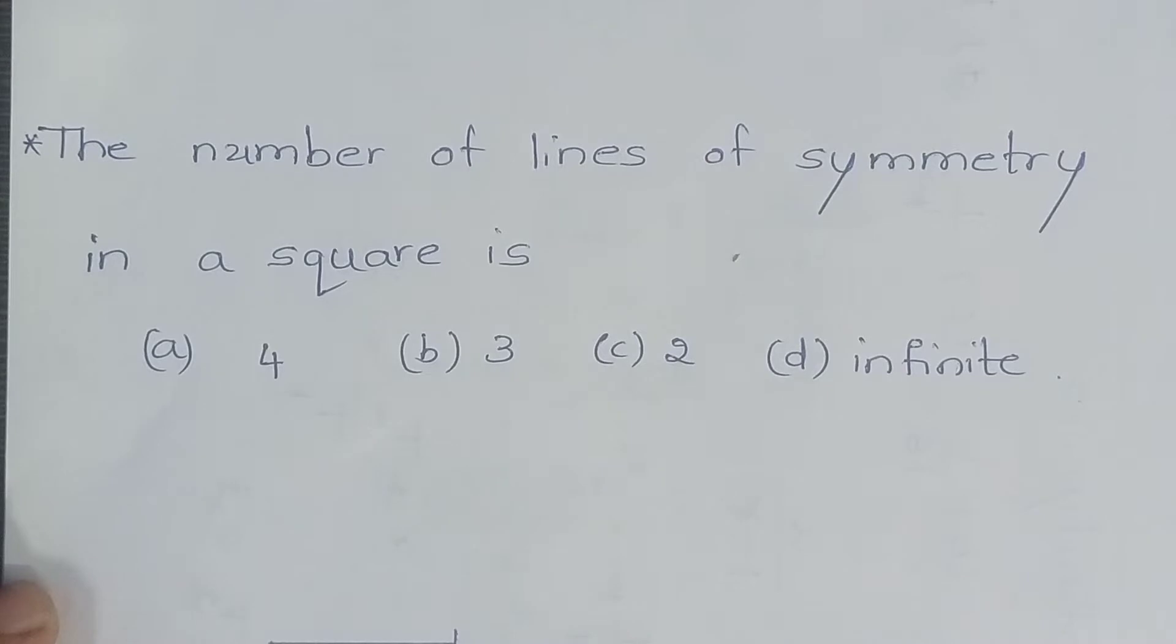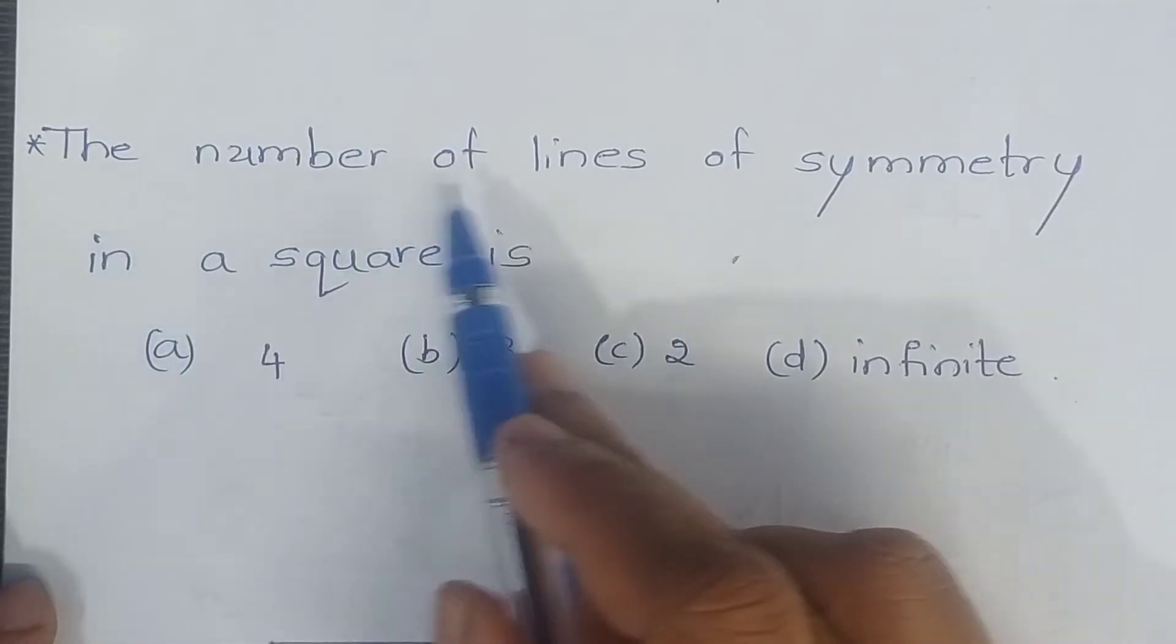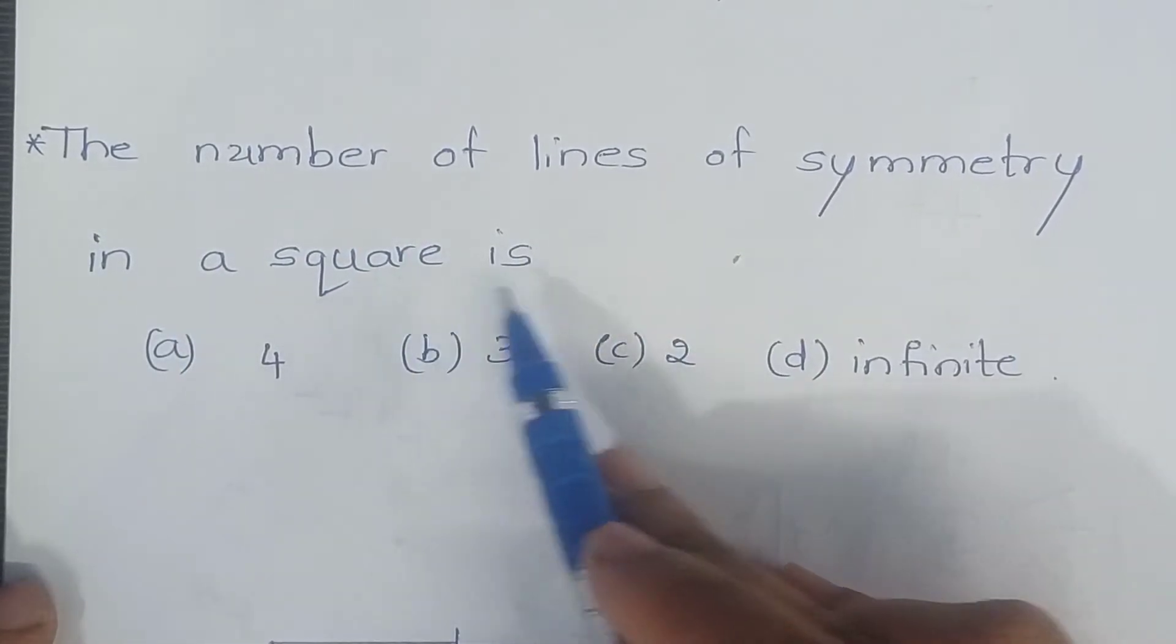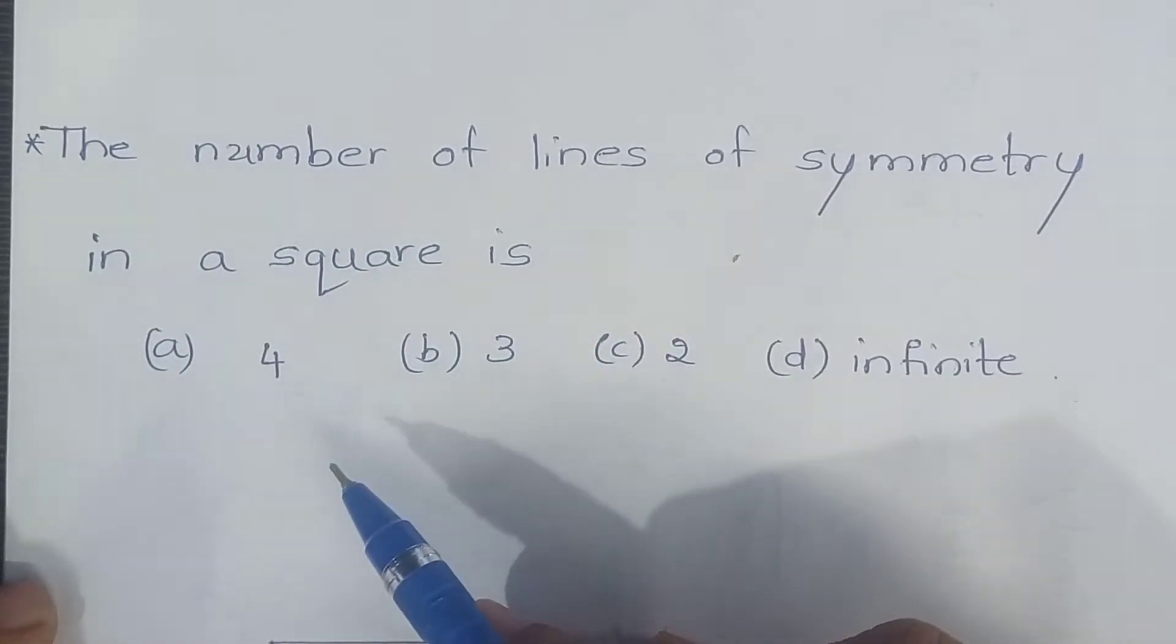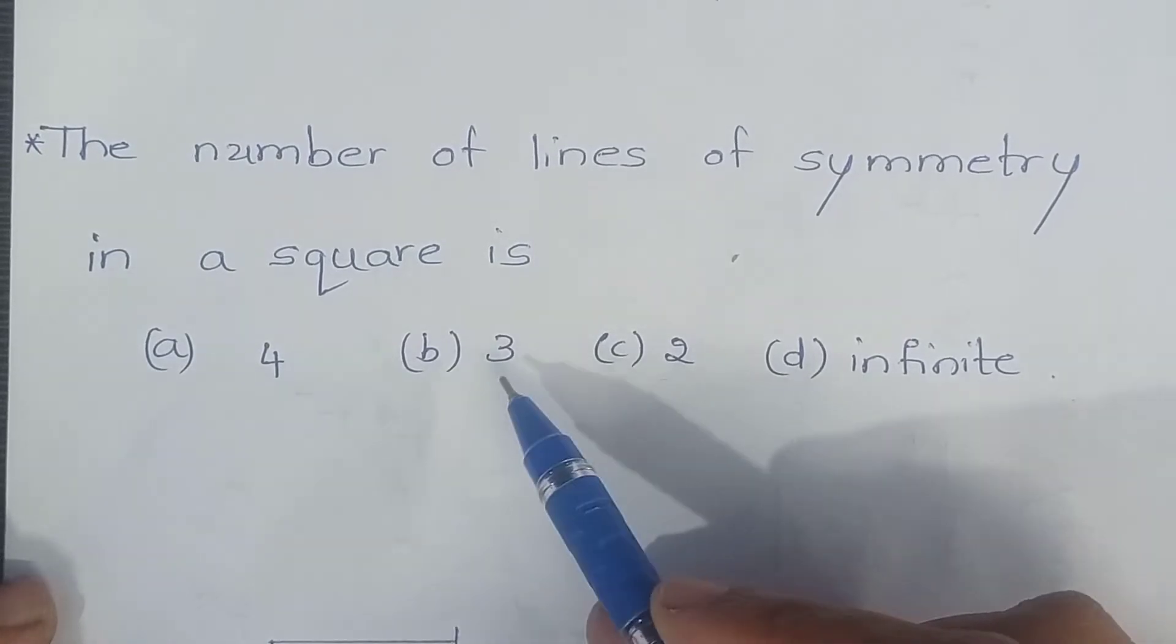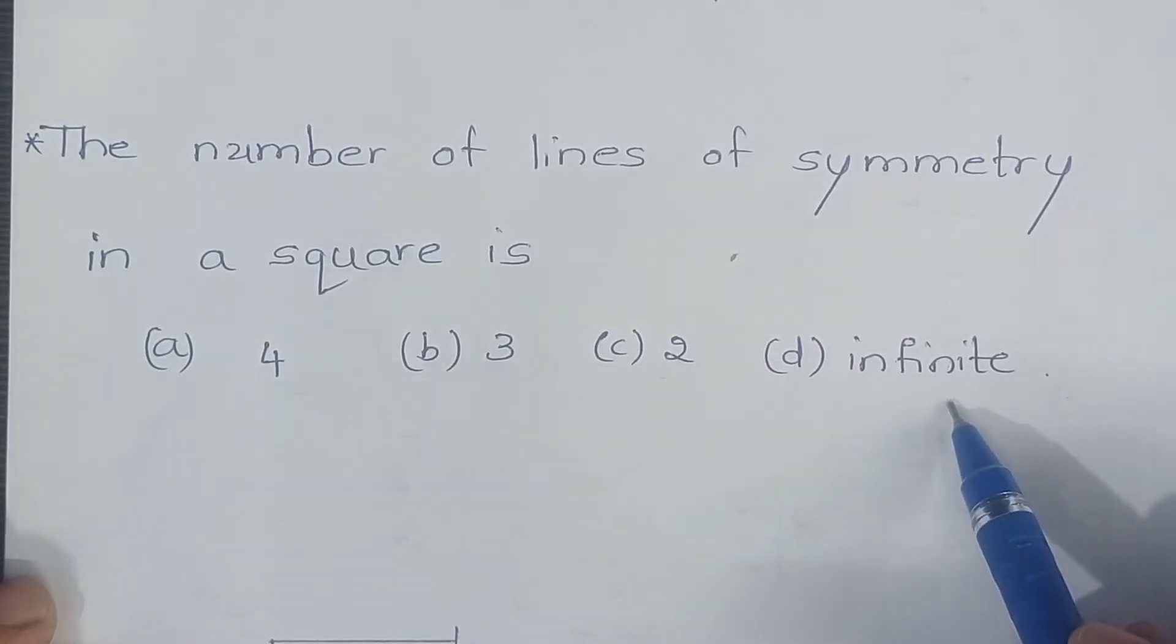Namaste, welcome to Blishon concept teaching. Now let's solve the problem. The number of lines of symmetry in a square is, and the options are 4, 3, 2, infinity. This means they are asking how many lines of symmetry you can draw in a square.